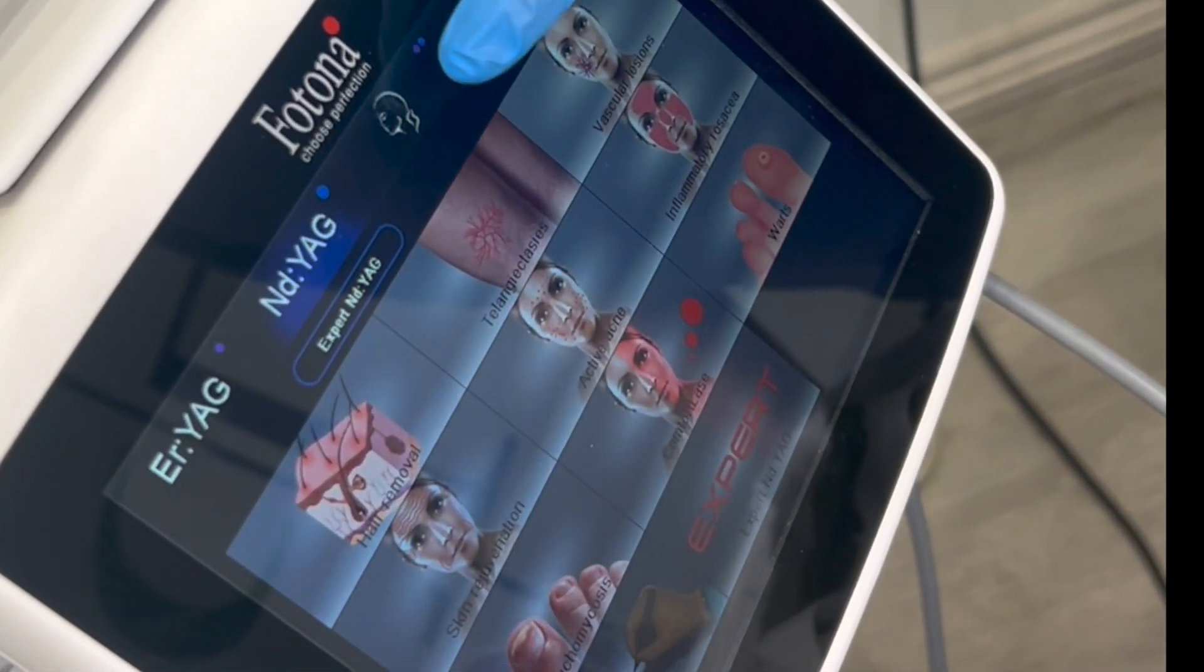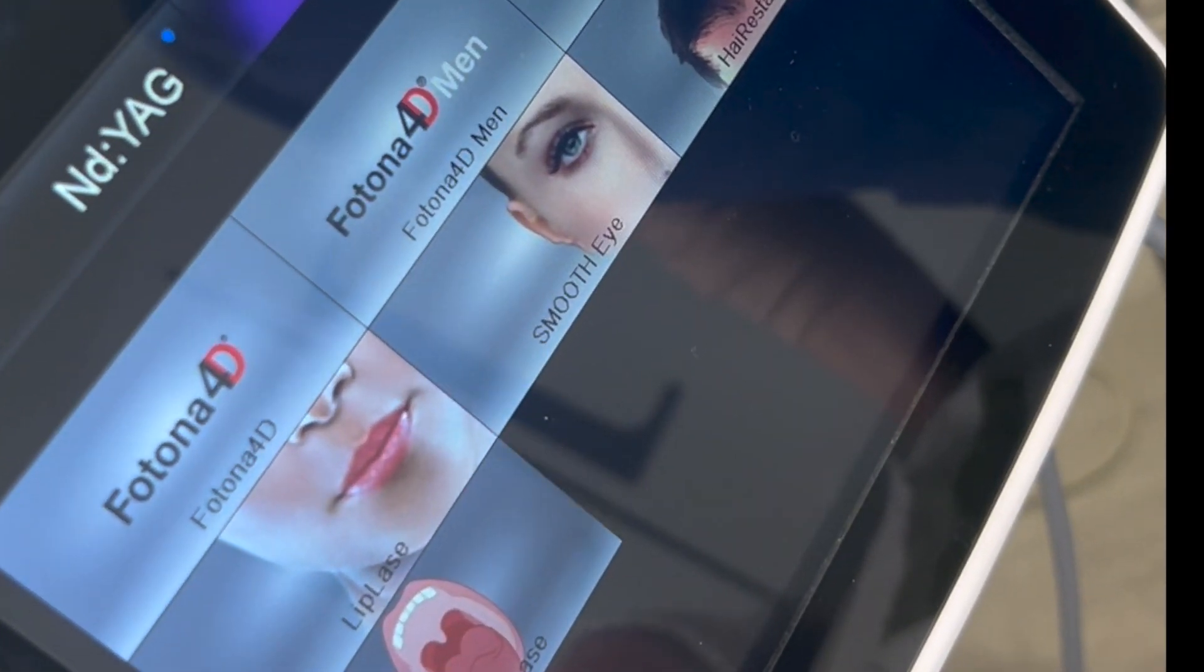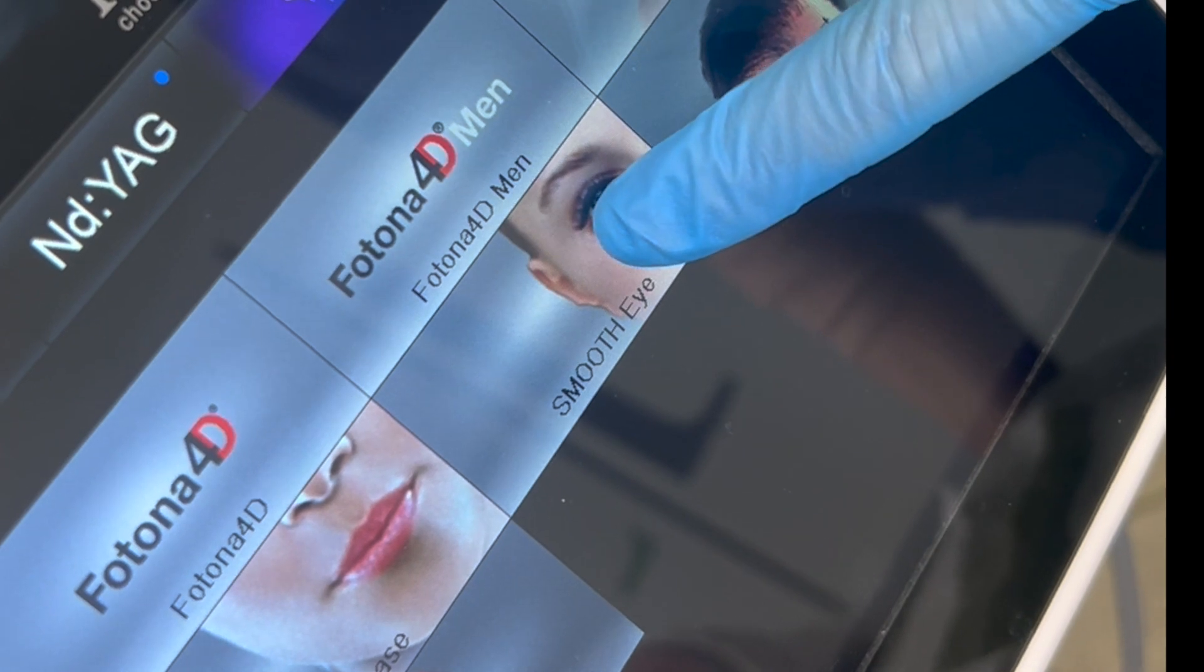We're now going to the twin light option on the interface and finding smooth eye and selecting that treatment.